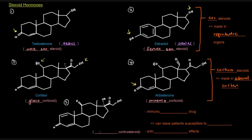This last one, number five, is a synthetic corticosteroid called prednisone. Prednisone is used to treat anti-inflammatory diseases, and it is an immunosuppressant drug. Though it can treat anti-inflammatory diseases, because of its immunosuppressive effects, it can leave patients susceptible to infections. So if someone is taking prednisone for some sort of disease, we want to make sure that everything we give them is clean and free from infections, because they're especially susceptible.